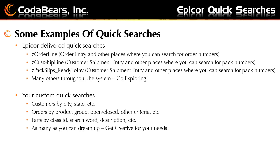You can also have your own custom quick searches. Maybe you want customers by city, state, etc., to look up your customer IDs. Maybe you want orders by a product group, open and closed, or any other criteria. Maybe you want to look up parts by class IDs, search word, description, etc. As many as you can dream up — get creative for your needs.